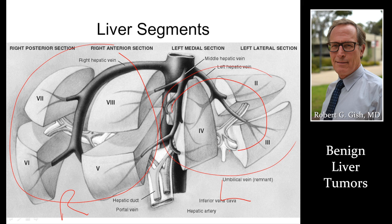The segments are numbered one through four, like a clock, and five through eight, like a second clock. Those segments are important to note because radiologists will say there's a tumor in segment seven or segment one. That helps guide the provider to think about what to do about that tumor — biopsy, resect, monitor, or ignore. All of these are options for liver tumors.